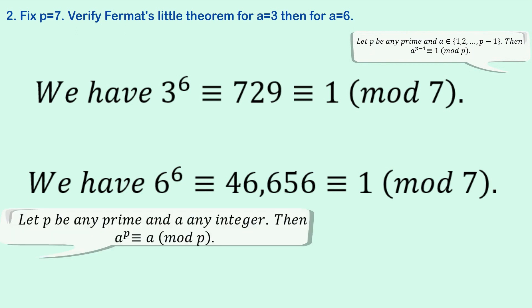Now, if you were using, for example, that first definition from Wikipedia that you get a to the p is congruent to a mod p, then you'd say 6 to the 7 is congruent to 279,936, which is congruent to 6 mod 7.